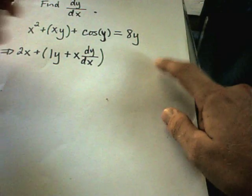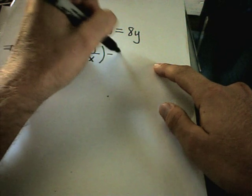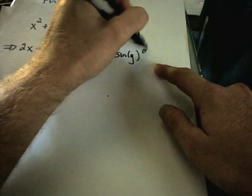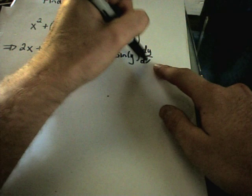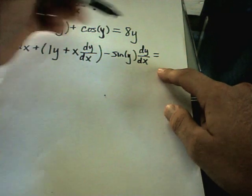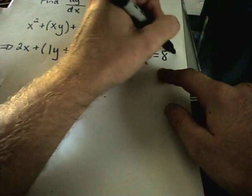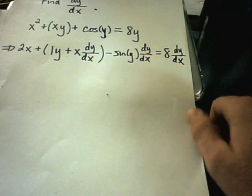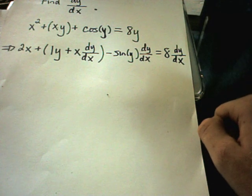Next, we take the derivative of cosine of y. That'll give us negative sine y. And again, I have to tack on my dy/dx. And on the right hand side, the derivative of 8y will be 8 dy/dx. So now I've done the derivative part.